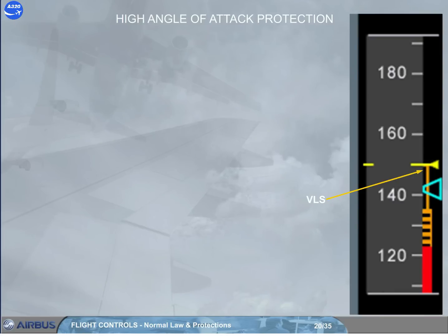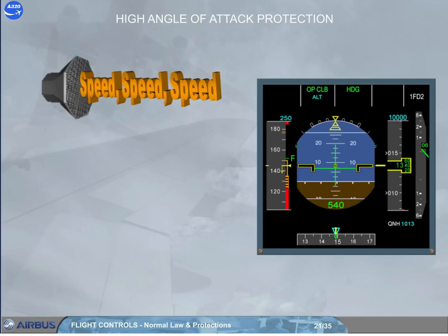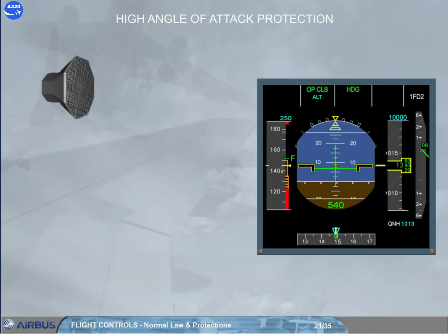VLS corresponds to 1.23 of VS after one step of flap retraction, and 1.28 of VS in clean configuration. A low energy aural warning — 'speed, speed, speed' — repeated every 5 seconds, warns the pilot that the aircraft's energy level is going below a threshold. Under this threshold, the pilot must increase thrust to recover a positive flight path angle through pitch control. The FAC computes an energy level taking into account the configuration, the horizontal deceleration rate, and the flight path angle.